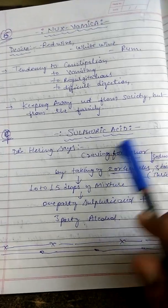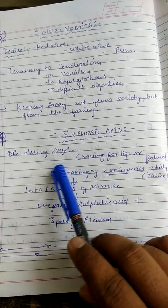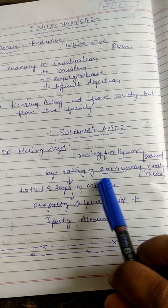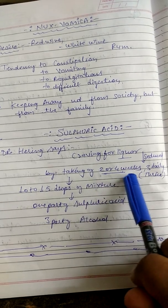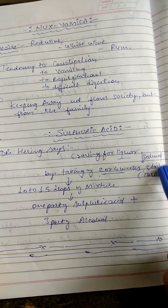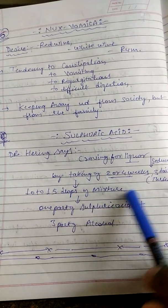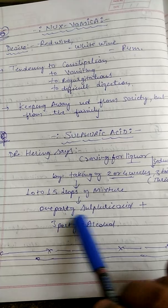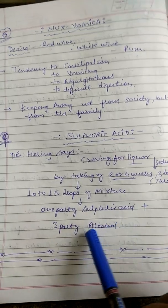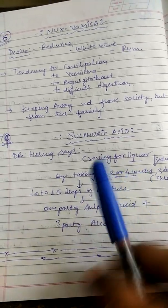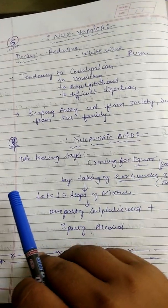Sulfuric Acid — Dr. Herring ne kaha hai: craving for liquor can be reduced by taking, two to four weeks, thrice daily, 10 to 15 drops of mixture of one part sulfuric acid and three parts of alcohol. Iss combination se alcohol ki craving kaam ho jaati hai.